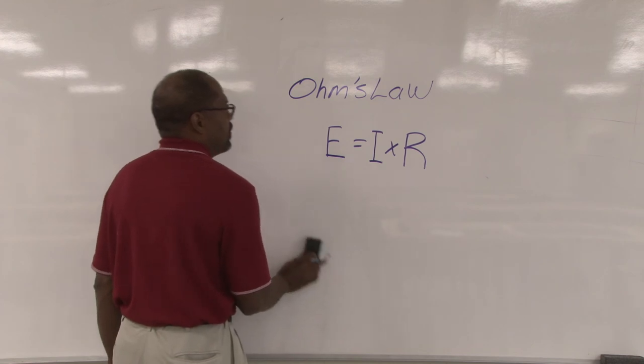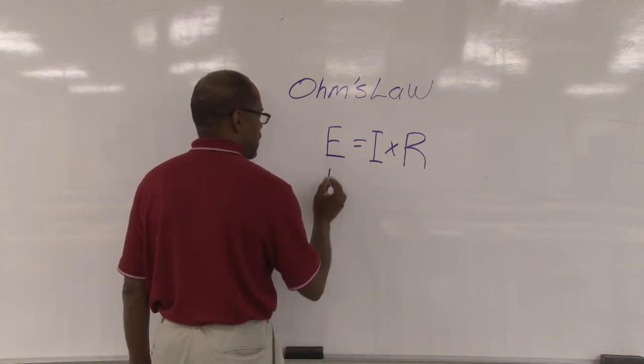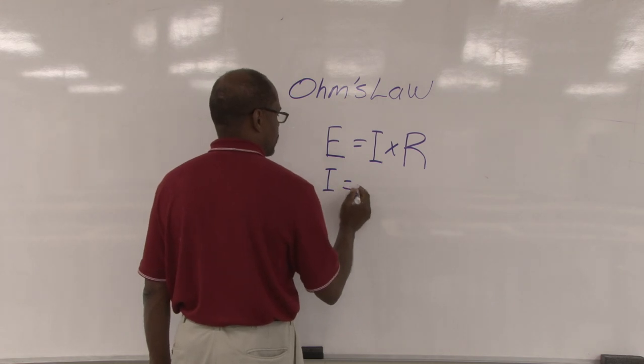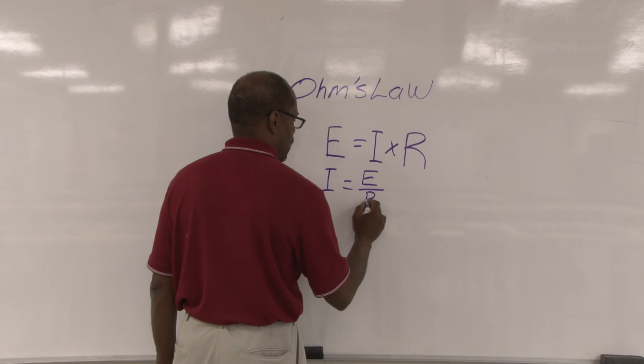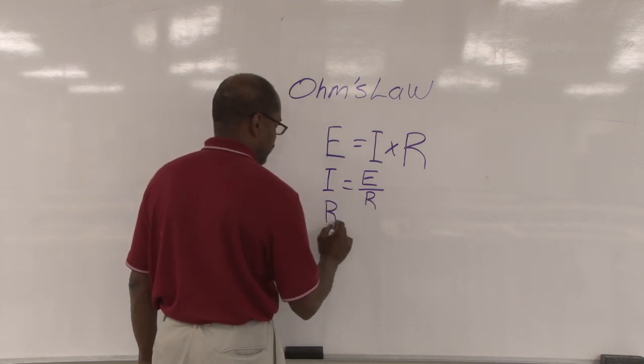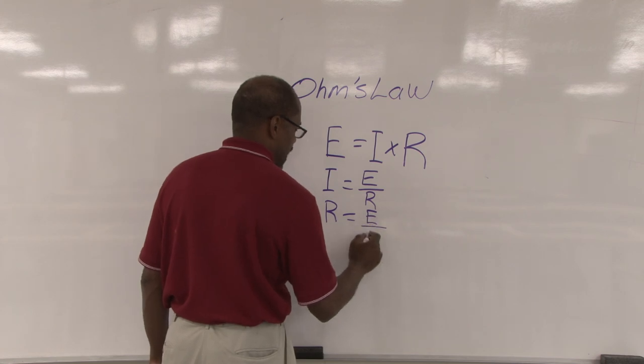If you want to state it differently: I equals E over R, and R, or resistance, equals E over I.